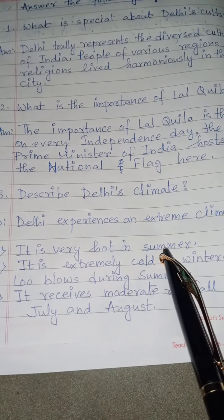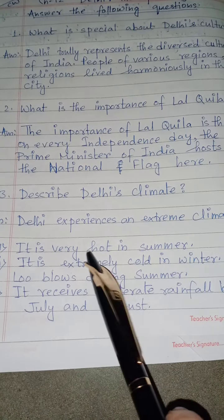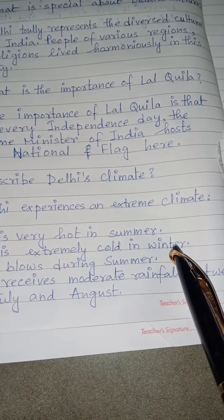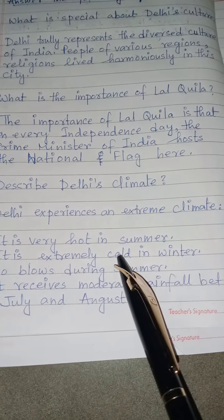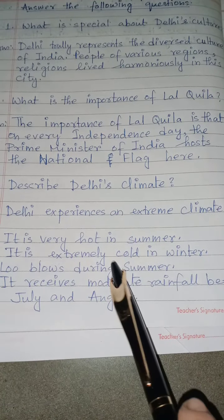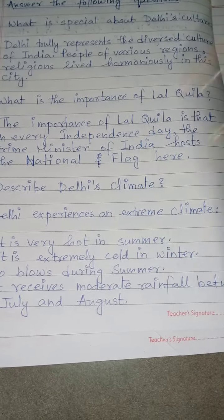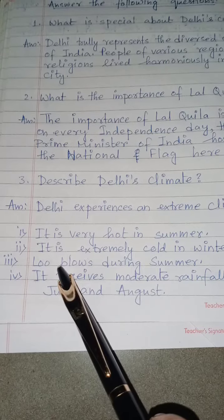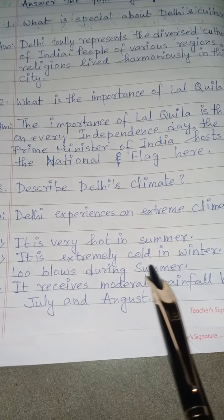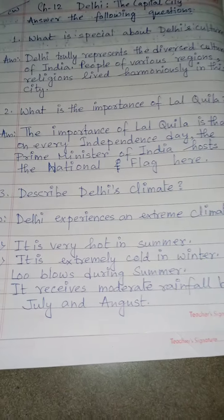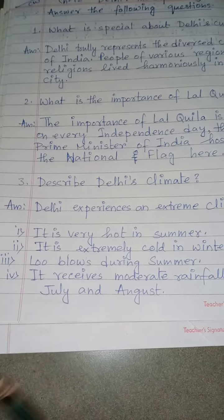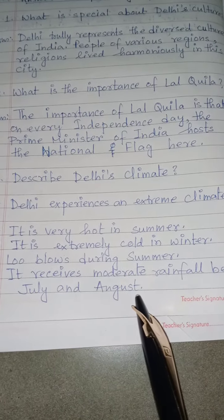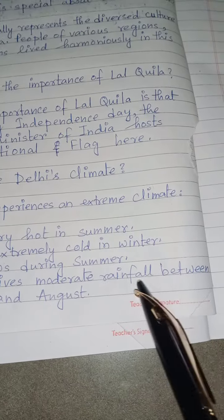Number 1: It is very hot in summer. गर्मी के season में Delhi में बहुत गर्मी पड़ती है. Number 2: It is extremely cold in winter. Number 3: Loo blows during summer. Summer के season में Loo बहता है — Loo matlab hot dry wind. Number 4: It receives moderate rainfall between July and August. July and August के महीने में वहाँ पे बारिश होती है.